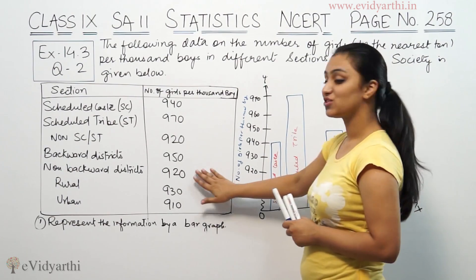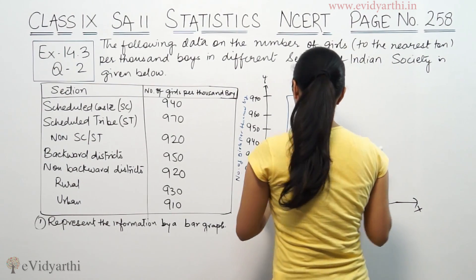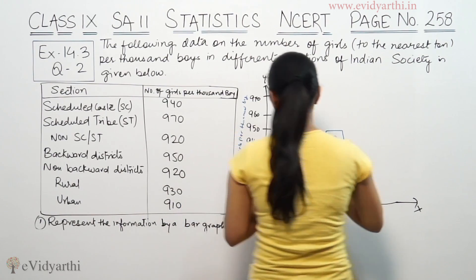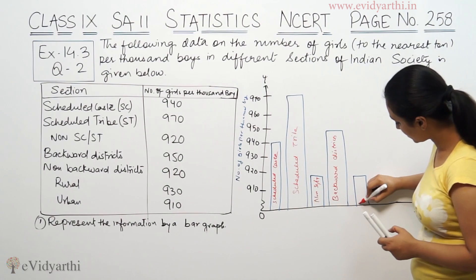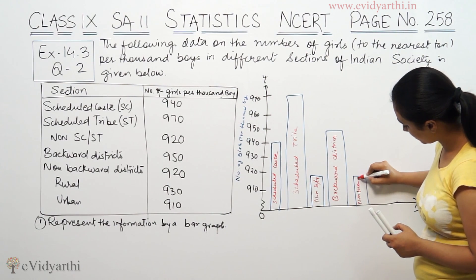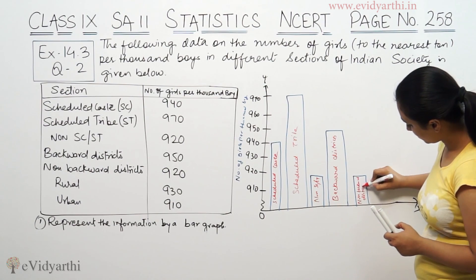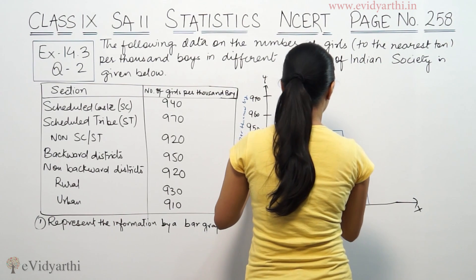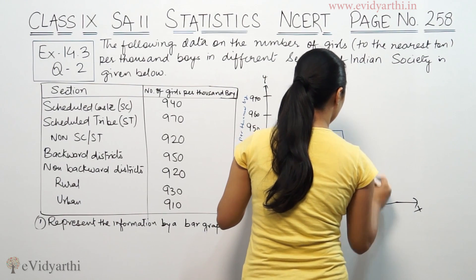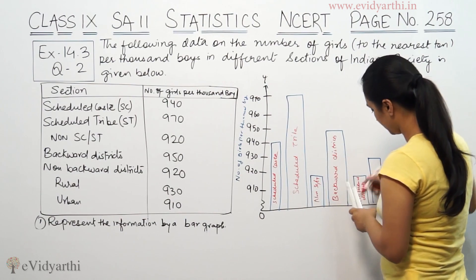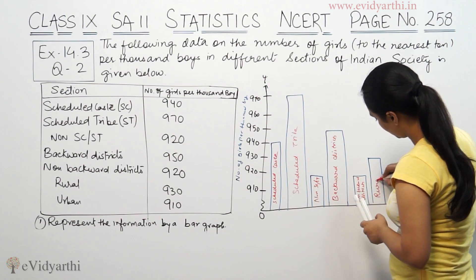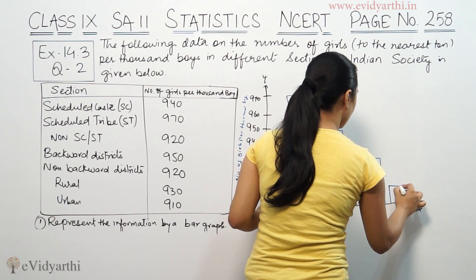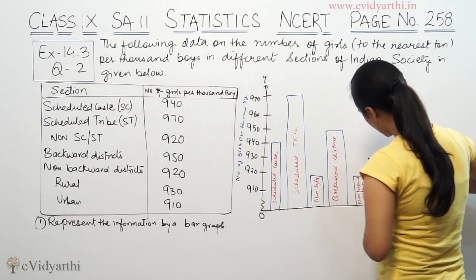Non-backward districts is 920, so that bar is placed at 920. Rural is 930, so that bar is at 930. Urban is 910, and that bar is placed at 910.